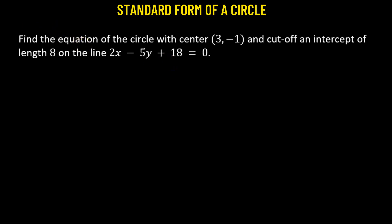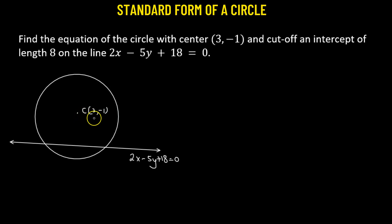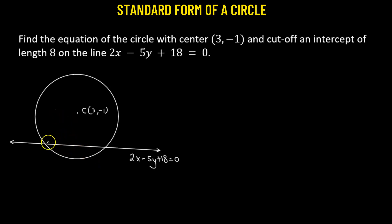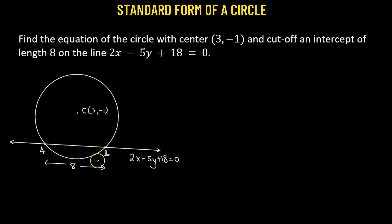Let's try to understand the problem graphically. We have a circle with center C at coordinate (3, -1). Then we have the line 2x minus 5y plus 18 equals 0, which passes through the circle, and the circle makes an intercept of length 8. If we consider one point of intersection to be A and the other to be B, then the length of AB is 8 units.